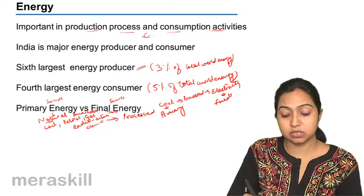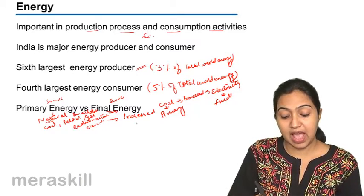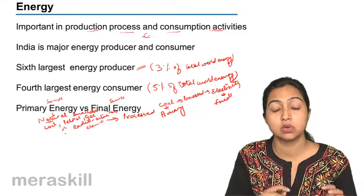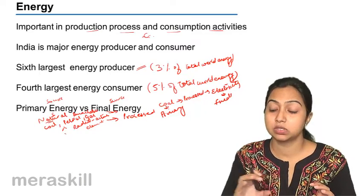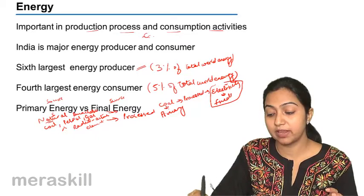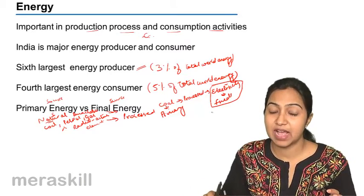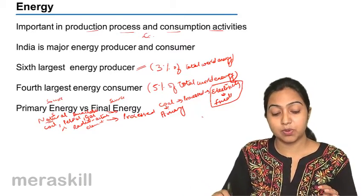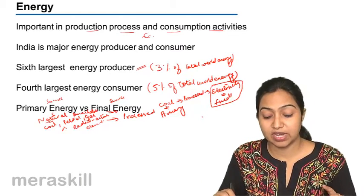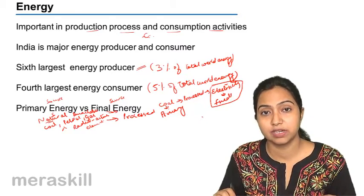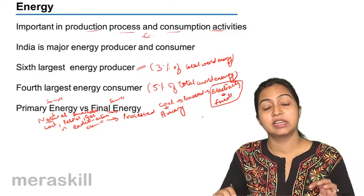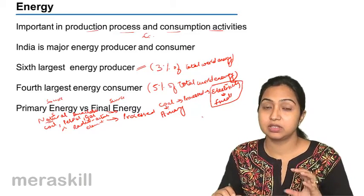All these primary sources of energy can be used as primary source also and final source also because they can be used directly also to get energy and then they can be processed also to get another form of energy which can be used. And electricity is the only form of energy that can be used only as a final source of energy. So primary one, it is the thing that is naturally available and then when it is processed, you get a secondary or final source of energy. And it is also called primary because it can be used in that stage also and then it can be processed and used as a final source of energy.